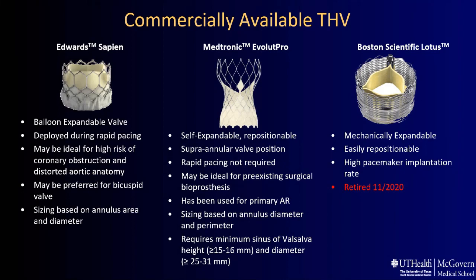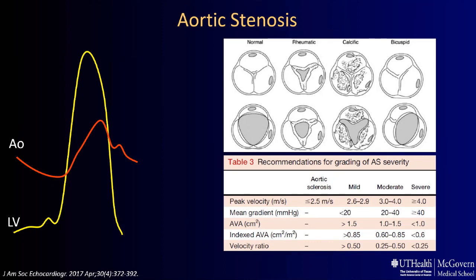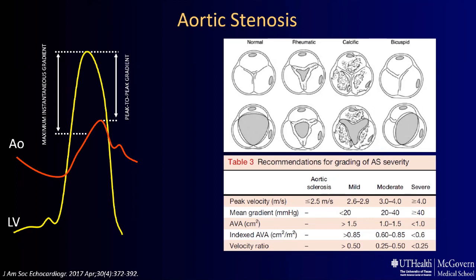Let's talk a little bit about aortic stenosis. We cannot do a TAVR echo talk without talking about proper diagnosis of aortic stenosis. This is defined as a systolic pressure gradient between the left ventricle and the aorta, which can be measured as peak-to-peak gradient — typically done in the cath lab — or maximum instantaneous gradient, which is larger, as the peak aortic and LV velocity are not concurrent. It is very important to measure the mean gradient, which correlates very well with the severity of aortic stenosis in patients with normal cardiac output, and the derived aortic valve area using the continuity equation.